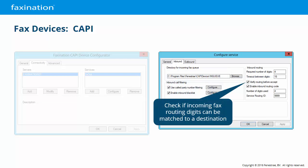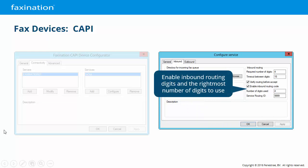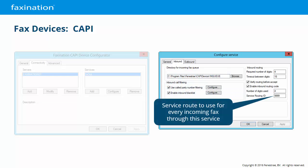Reject calls if the routing digits cannot be matched to the destination. Enable inbound routing based on digits coming from the telephony system and specify the rightmost number of digits to use for routing — for instance, you might be receiving 10 digits from a PBX but only want to route on the last four. Service routing ID for this device: remember that this is most often used for unroutable faxes and typically goes to an administrator. The 9999 number is the default, but can be anything.